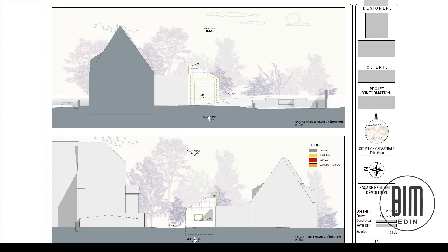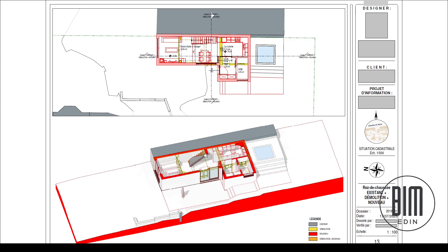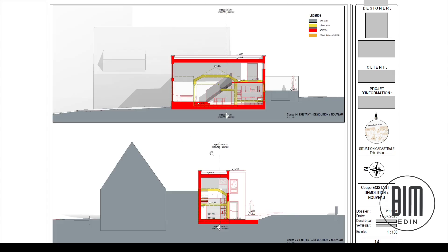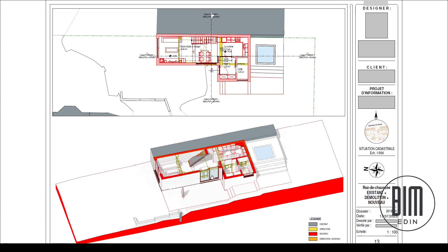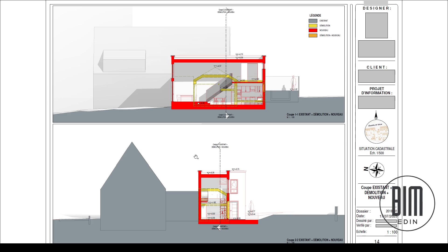Now here we have overlapped drawings. Here we have the new and demolished together, and also in the isometric view we have new and demolished. The legend shows us what is what. In the sections we also have the new, demolition, and existing parts shown together.